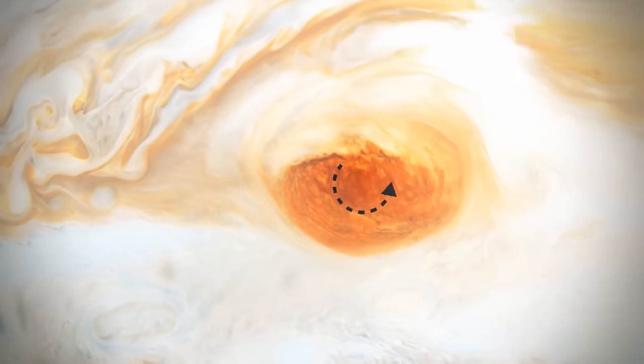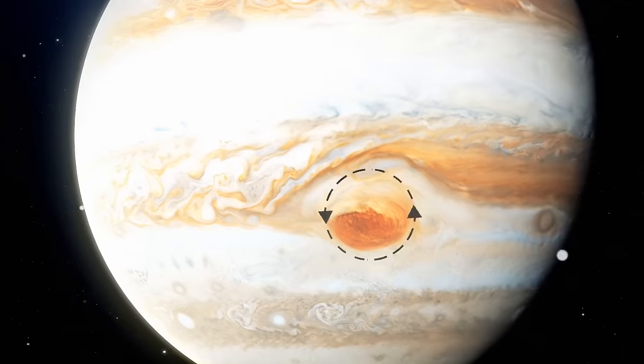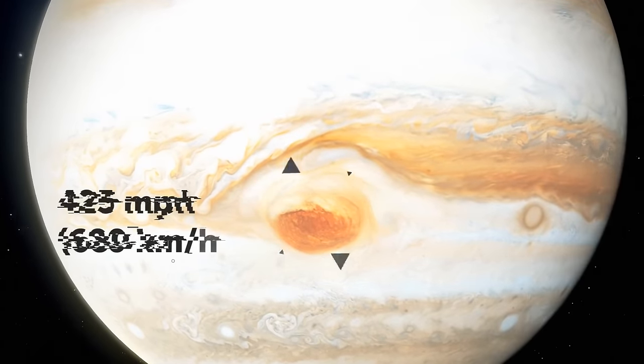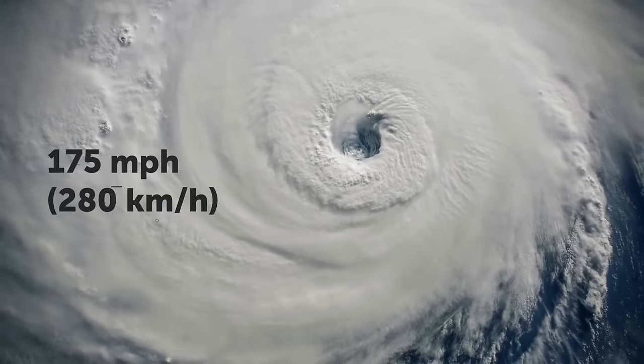At the center of this giant spinning storm, the winds are relatively calm. On the edges, wind speeds go up to 425 miles per hour. That's twice as fast as the strongest hurricanes on our planet, 175 miles per hour.